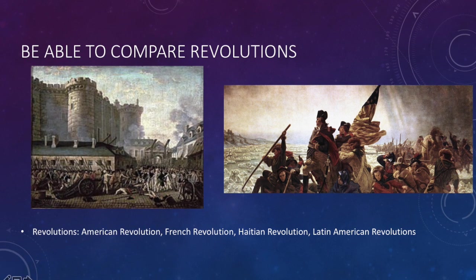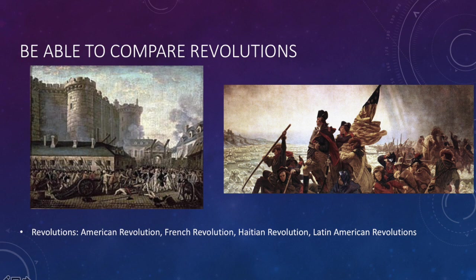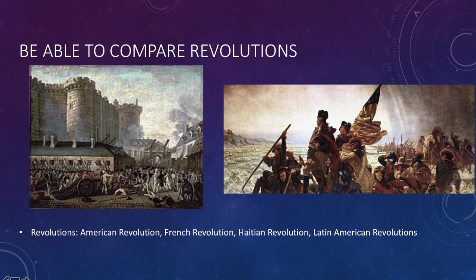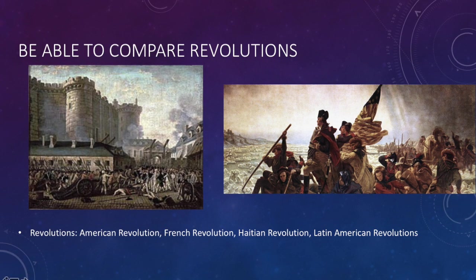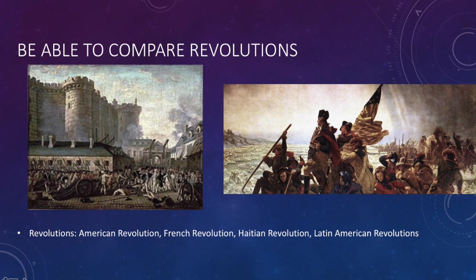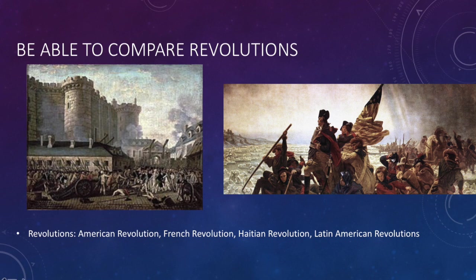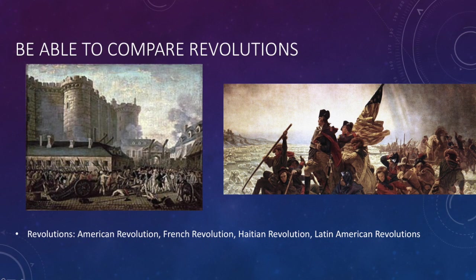On page 231, it says the American Revolution involved a colonial uprising against the imperial powers — in other words, it was an independence movement. The French Revolution involved citizens rising up against their own country's leadership and against their own political and economic system, and in that sense was more of a revolution.